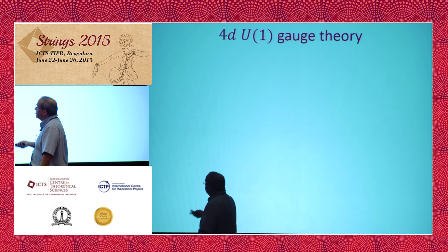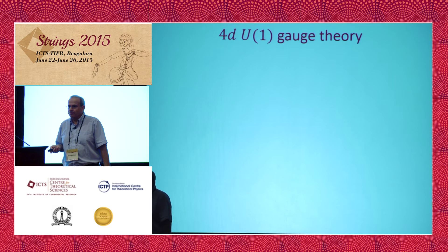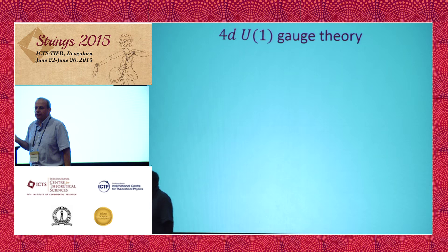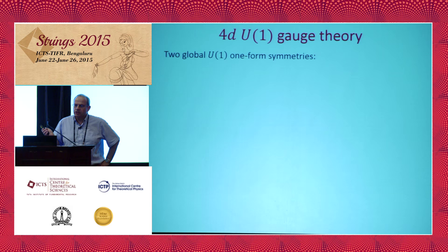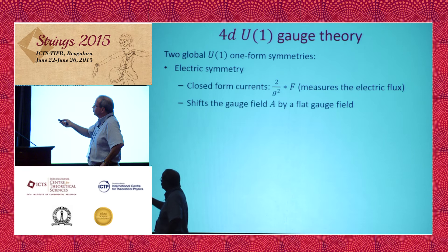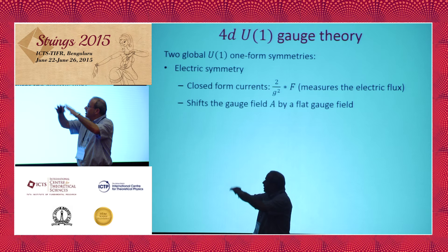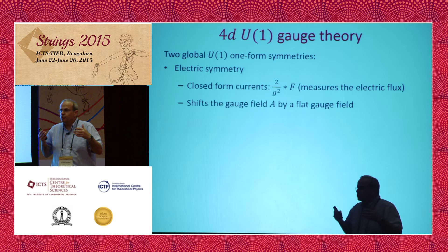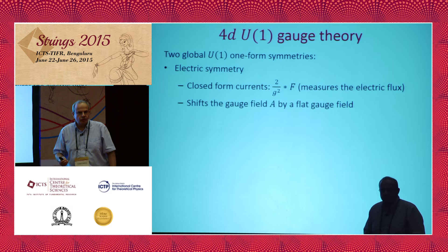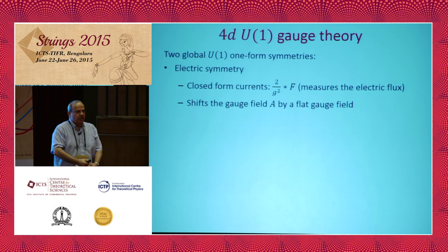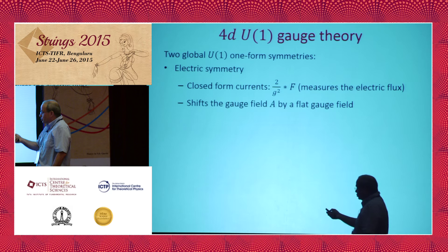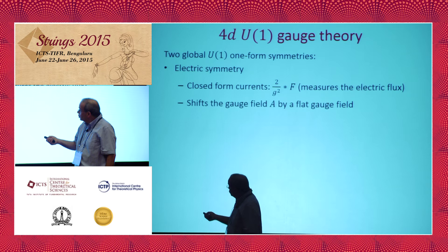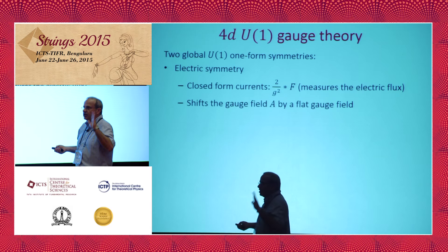I'll give two examples to show this can be made very concrete. The first is free field theory — four-dimensional Maxwell theory, just a U(1) field theory. In this case there are two such global symmetries. One is electric, associated with a conserved current which is star F. We can integrate star F with an arbitrary coefficient on the surface, put it in the exponent, and get such an operator. Physically, this measures the electric flux. The charged objects will be Wilson lines — the worldline of a charged particle — and as it moves around, there is electric flux around it.